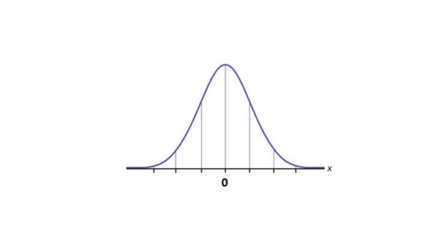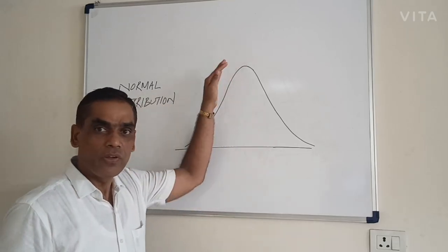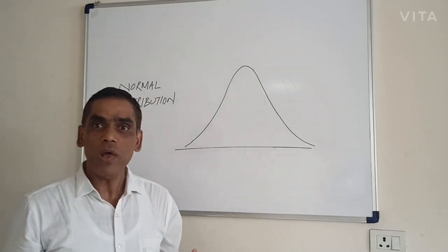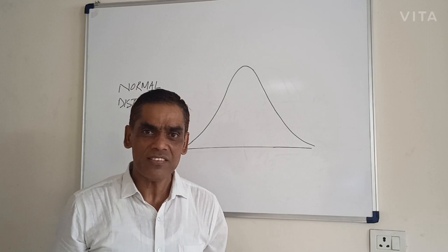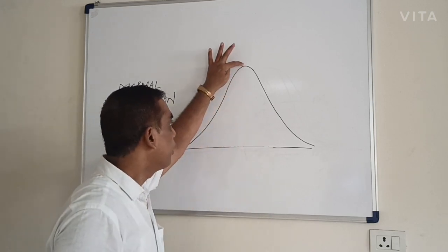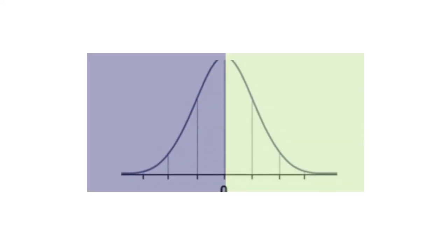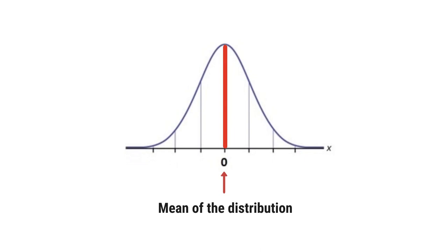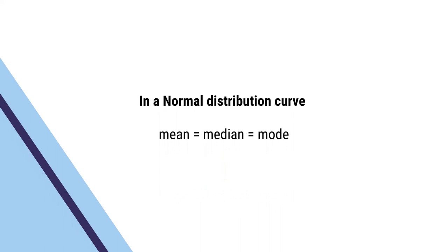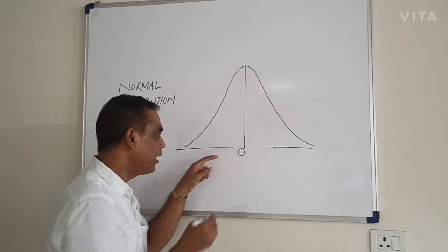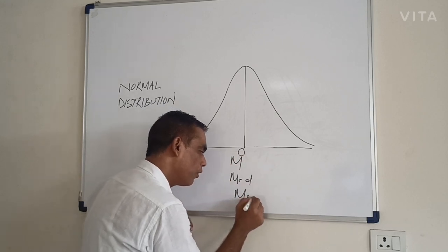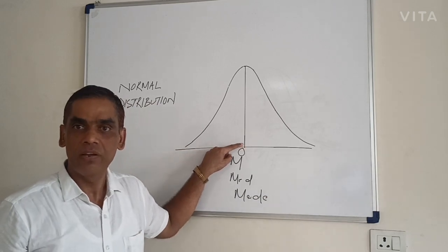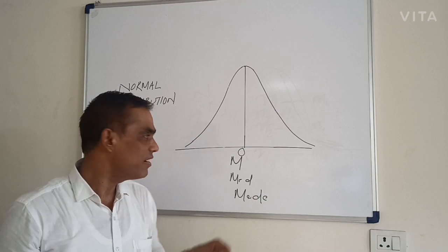It is a bell-shaped curve, symmetrical on both sides of its centre. From the peak of the curve, if the sloping line is equal or symmetrical on both sides, it exhibits bilateral symmetry. If a perpendicular is drawn from the peak of the curve to the base, it would divide the curve equally into two parts. That point is called the mean of the distribution. In a normal distribution curve, the mean is equal to the mode, which is equal to the median — meaning the mean, median, and mode coincide at a single point, exactly at the middle of the baseline, represented by O.